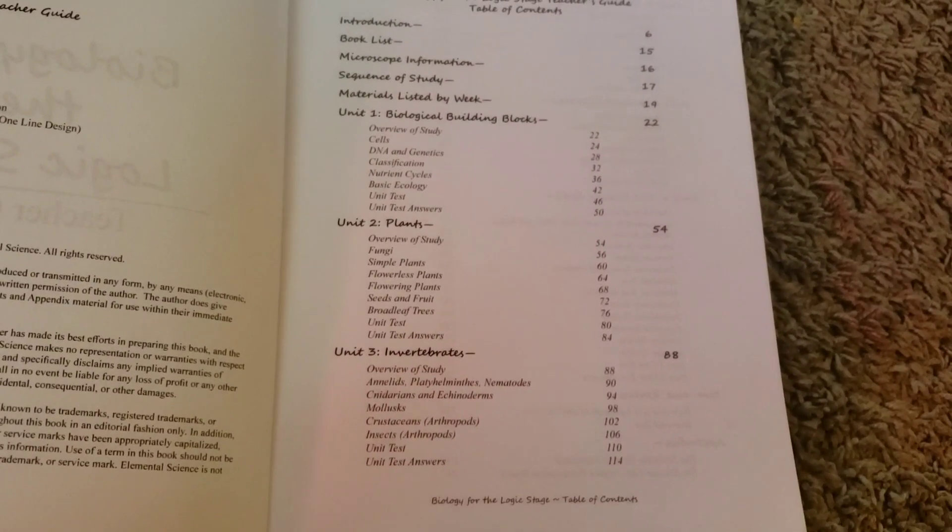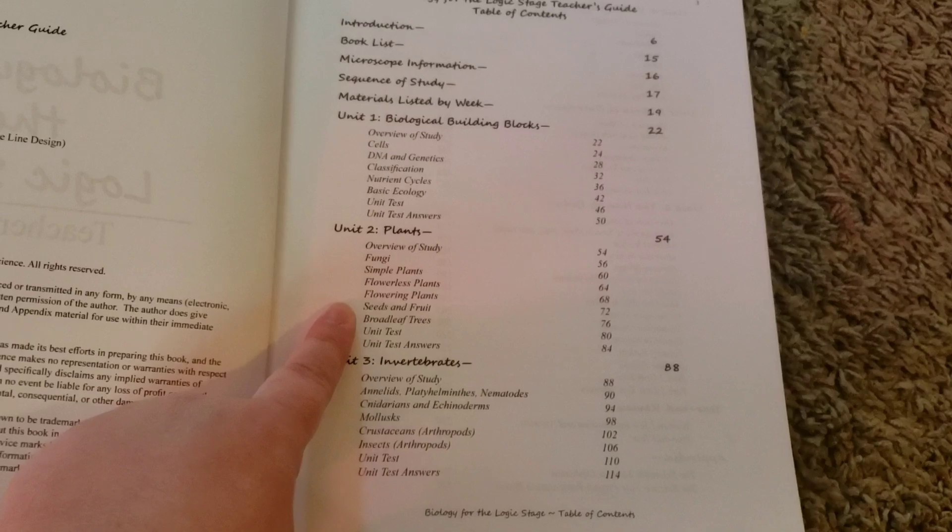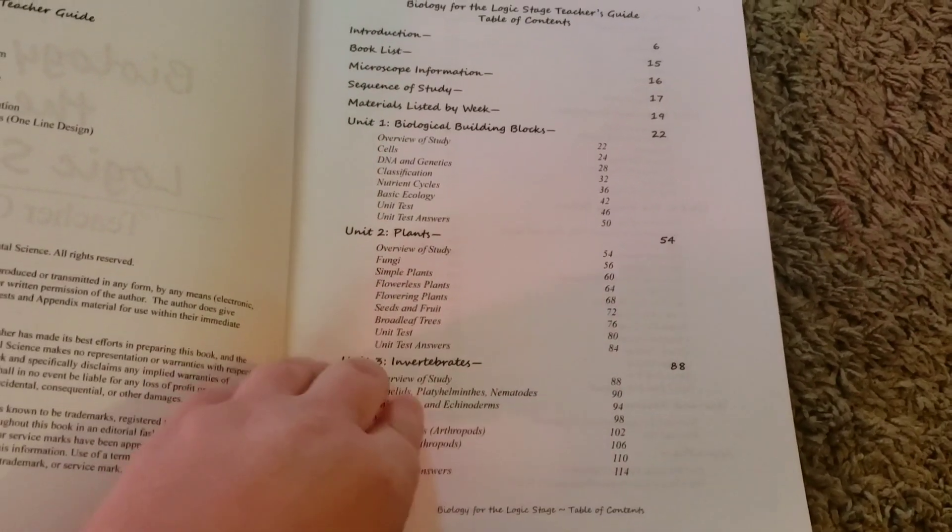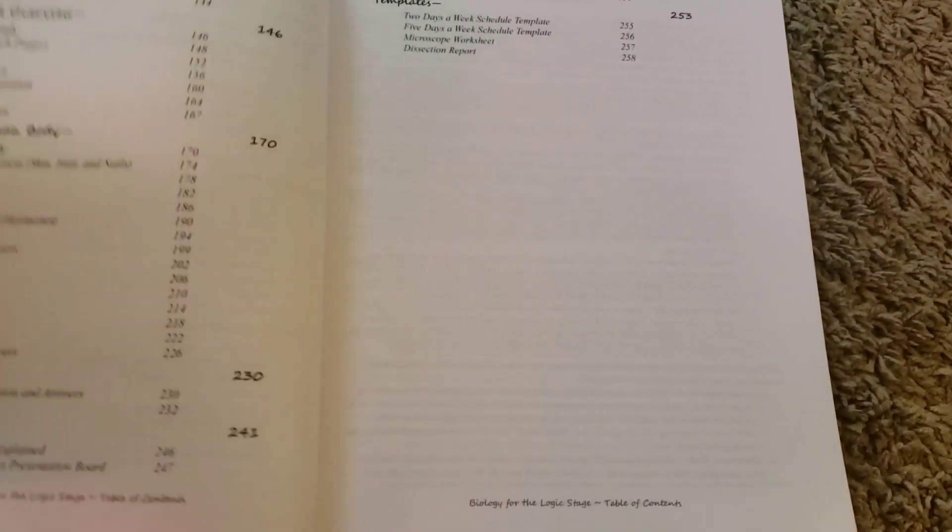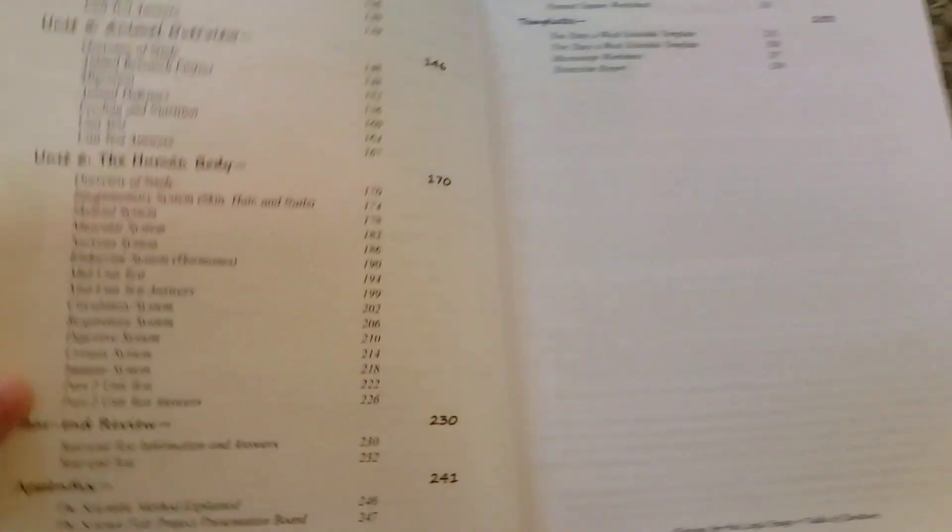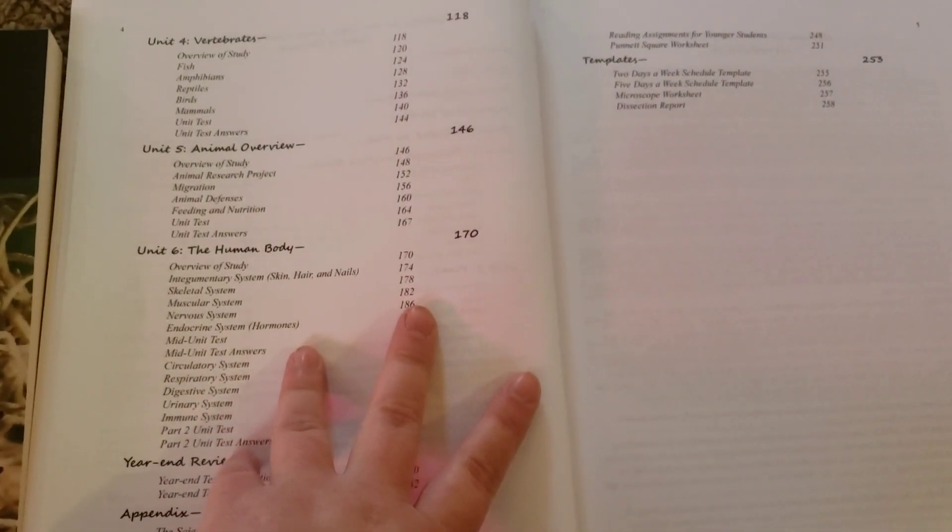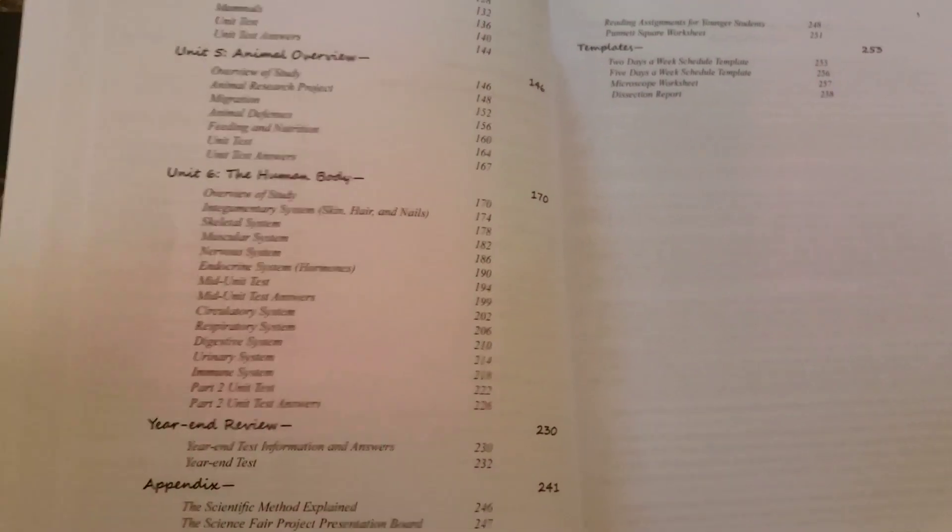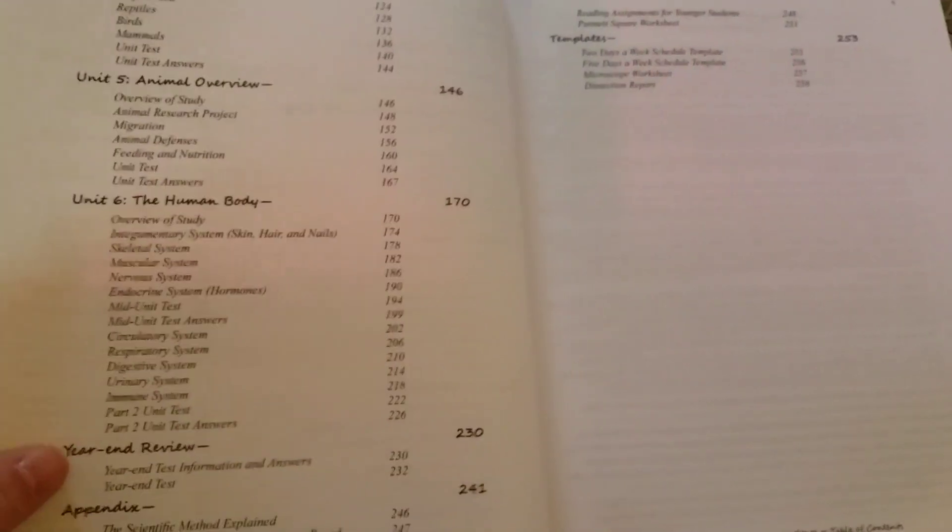The first unit is just biological building blocks, talking about cells, DNA, classification, that kind of thing. Unit two goes into plants. Unit three goes into invertebrates. Then, unit four, we have vertebrates. Unit five is animal overview, and unit six is the human body.